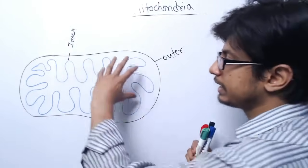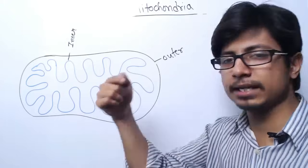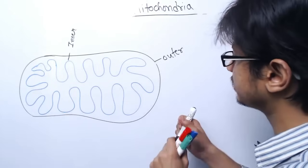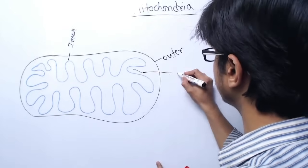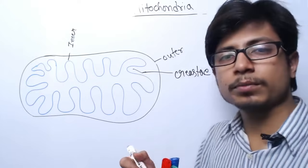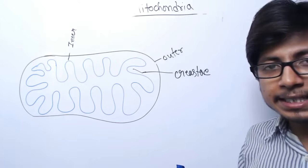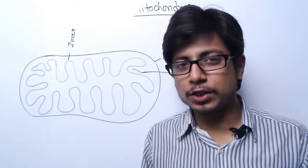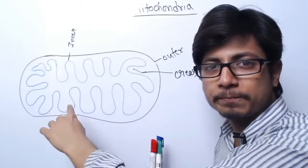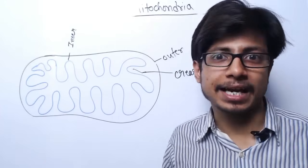If you look at the structure, the inner membrane is wrinkled — it is creating protrusions like fingers. These protrusions are known as cristae. Cristae are those protrusions coming out from the inner membrane. Why do we have so many protrusions like that? The reason is that one of the very important physiological processes goes on in this wrinkled membrane.